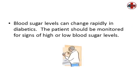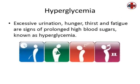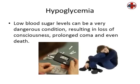Blood sugar levels can change rapidly in diabetics. The patient should be monitored for signs of high or low blood sugar levels. Excessive urination, hunger, thirst, and fatigue are signs of prolonged high blood sugars, also known as hyperglycemia. Low blood sugar levels can be a very dangerous condition, resulting in loss of consciousness, prolonged coma, and even death in severe cases.